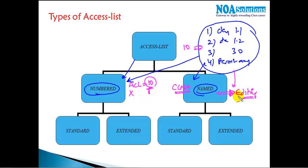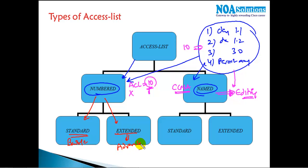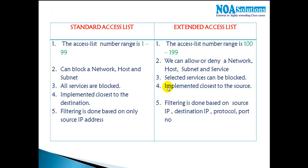There is one more major difference: in named ACLs, editing of rules is possible, which is not possible in numbered ACLs. I'll cover this in more detail in later sessions. Apart from named vs. numbered, the main classification is standard and extended. Standard ACL is basic filtering, while extended ACL provides more advanced filtering options.